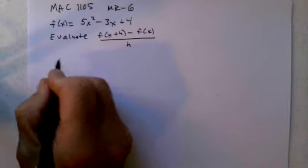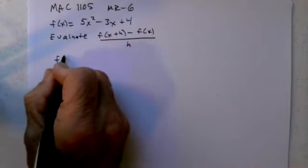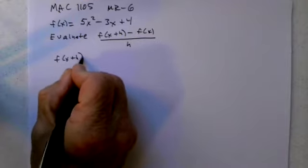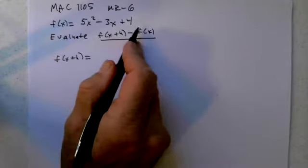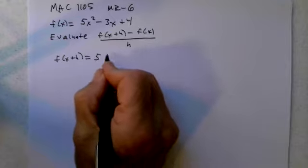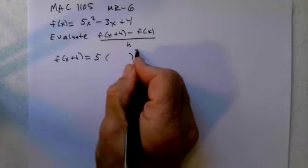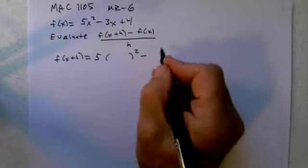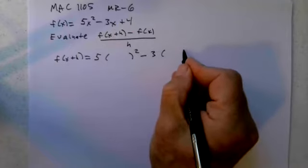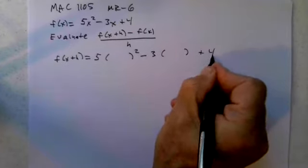The first thing I'm going to do is figure out what f(x+h) is. Wherever I have an x, replace it with x plus h. Before it was 5x squared, now it'll be 5(x+h) squared. Before it was minus 3x, it'll be minus 3(x+h) plus 4.